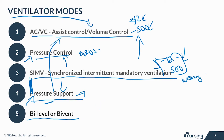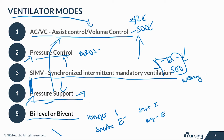Lastly, there is a bi-level or bi-vent mode. This is typically used when a conventional vent is no longer working for a patient, as it is more advanced and not all ventilators support it. It has high and low settings, and allows you to set longer inspiration with shorter expiration, or shorter inspiration with longer expiration. This helps patients with oxygenation problems where the conventional vent is just not doing the work.